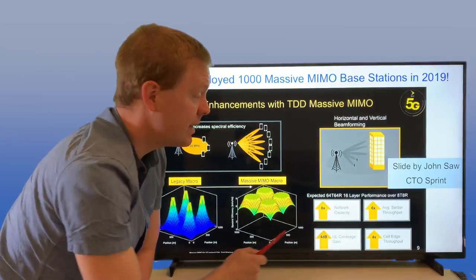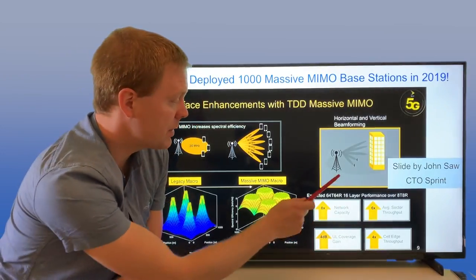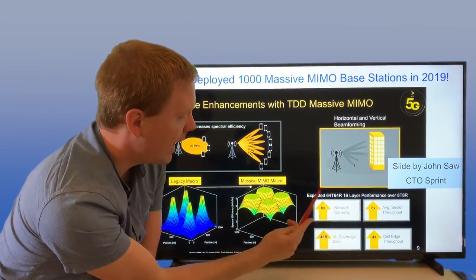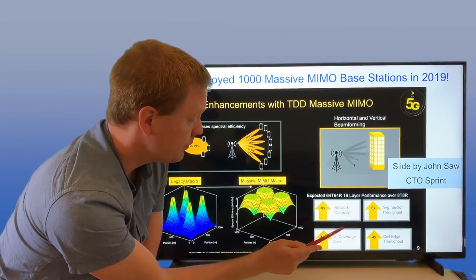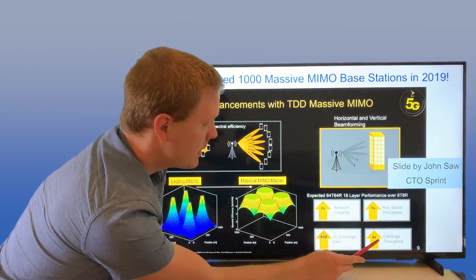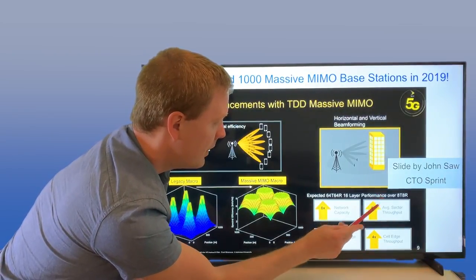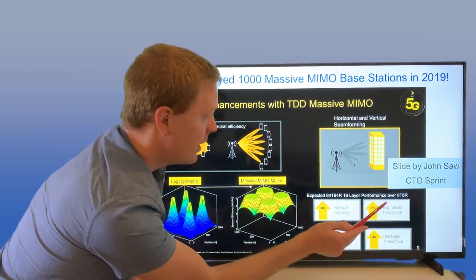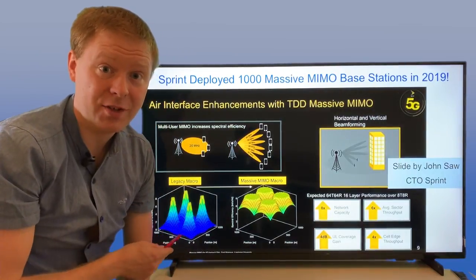When they put this into the real system, they had eight antenna arrays from before and they went up to 64. They saw immediately an eight times network growth in capacity, they had better uplink coverage, cell edge performance improved by four times, and they have six times better average throughput throughout the entire cell.